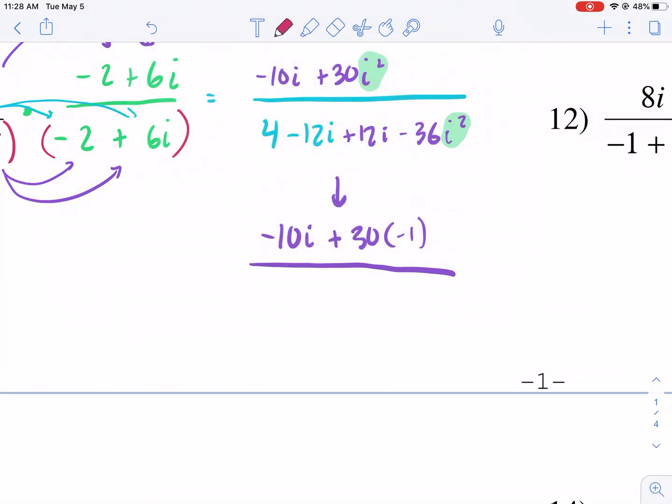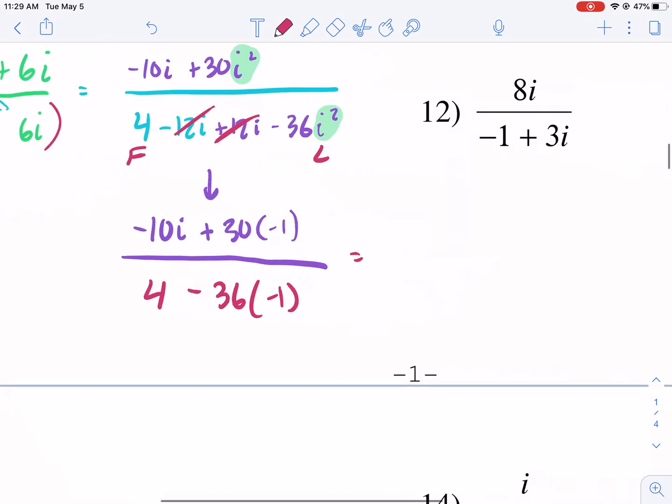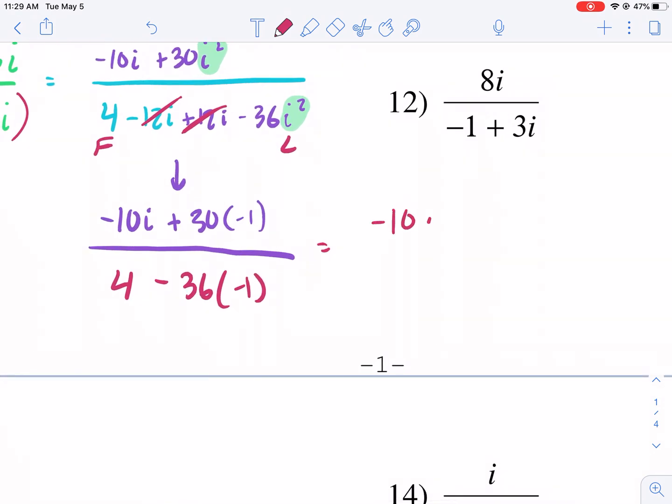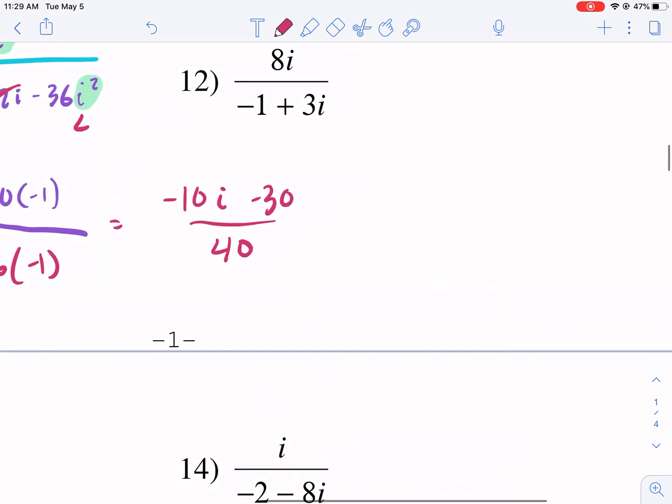Now look, this is the magic of conjugates here. So we have negative 12i canceled with the 12i. Like I said, this is the outside and the inside terms. They're always going to cancel with conjugates. So really, you just need to worry about the first and the last terms. That's something to keep in mind in the future to save you time. So then we have 4 minus 36i squared. And we're going to change the i squared to negative 1. Let's simplify a little bit further. We have negative 10i minus 30. And we have 4 minus 36 times negative 1. So that's 4 minus the negative 36 or 4 plus 36, which gives us 40.